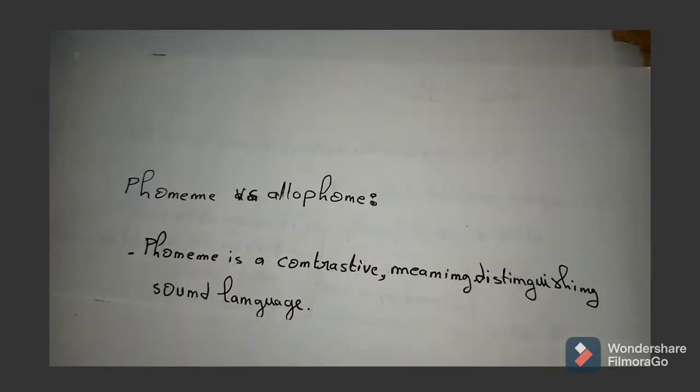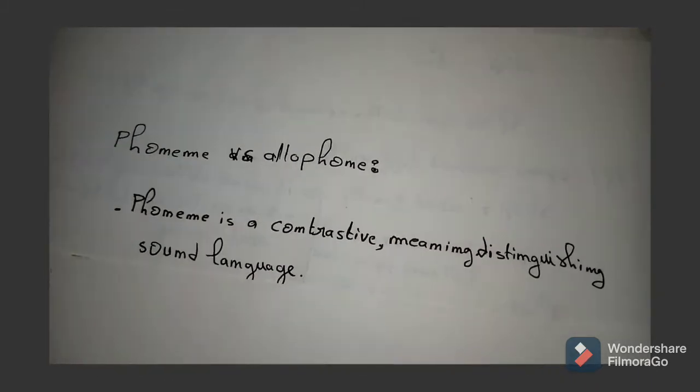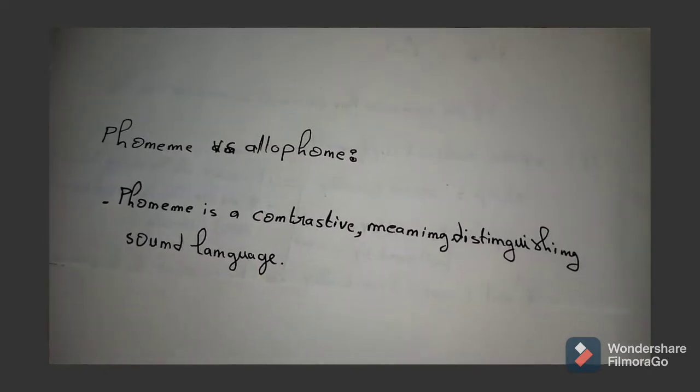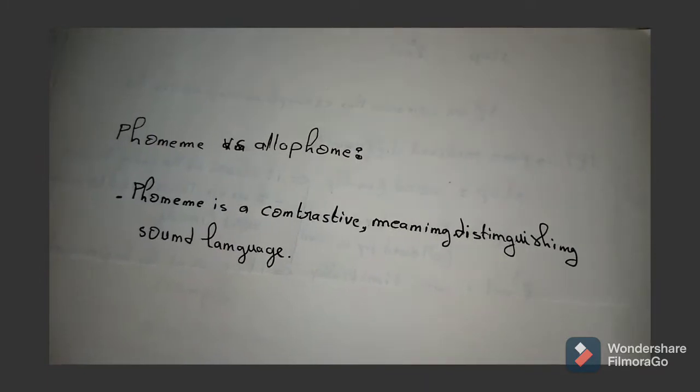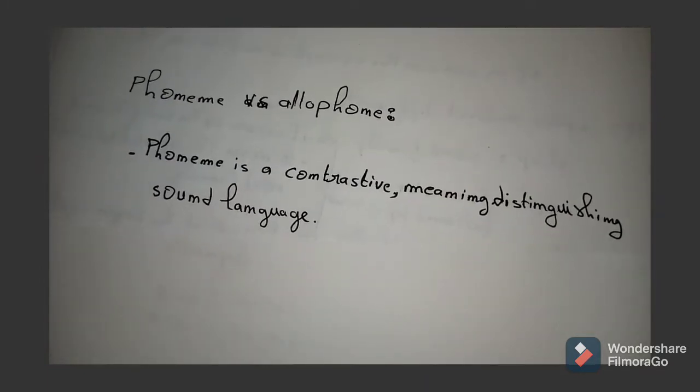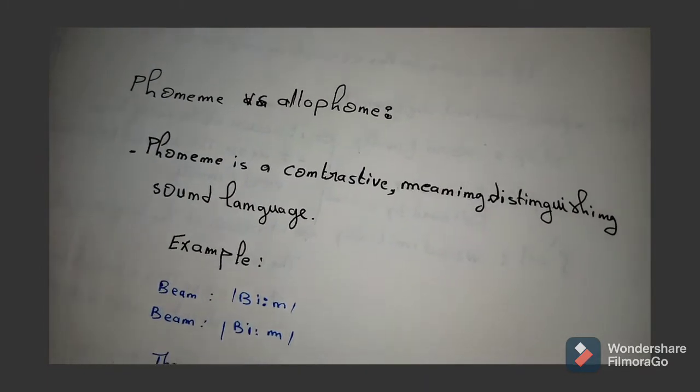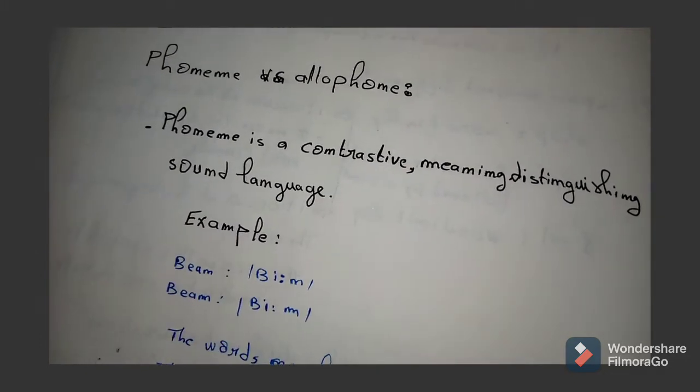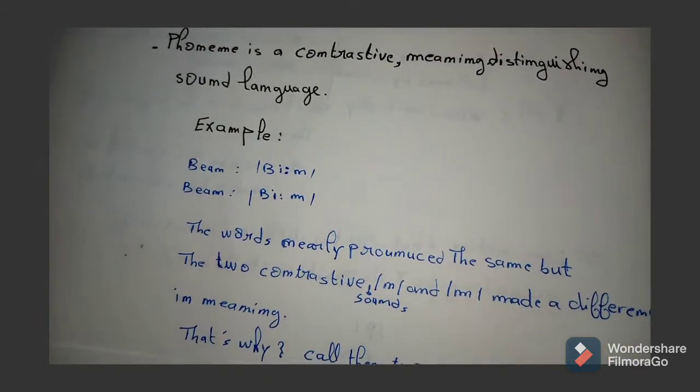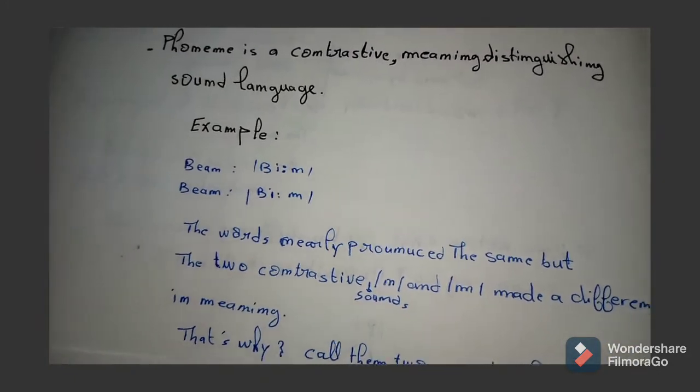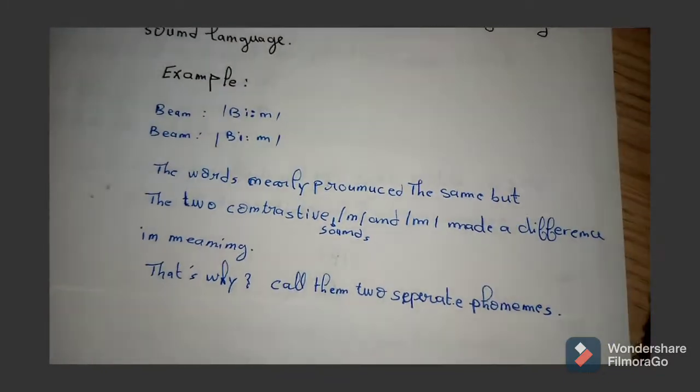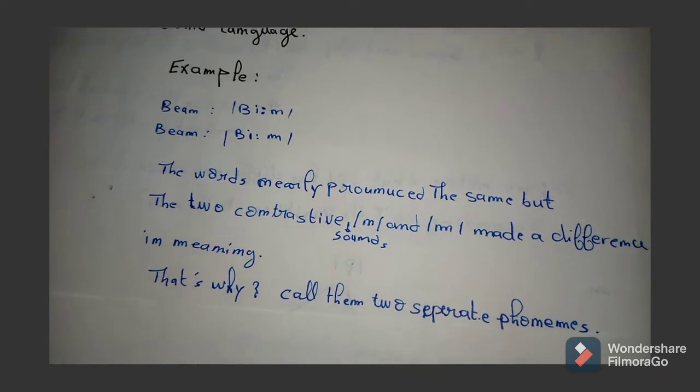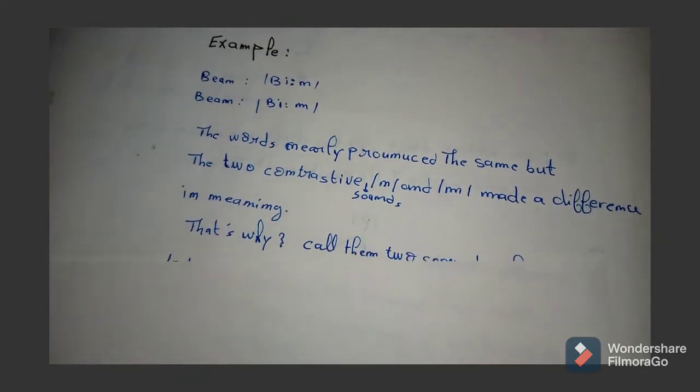So I hope to make the point very clear to you. Let's go back to the point. A phoneme is actually a contrastive, meaning-distinguishing sound in a language. That means that a phoneme is a sound that makes a difference in a language. If we consider the example 'bean' and 'beam', these are two words that are nearly pronounced the same.